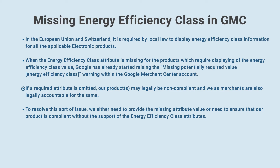If a required attribute is omitted, our products may legally be non-compliant, and we as merchants are also legally accountable for the same. To resolve this sort of issue, we either need to provide the missing attribute value, or need to ensure that our product is compliant without the support of the energy efficiency class attributes.